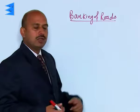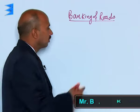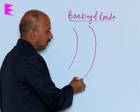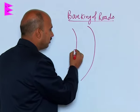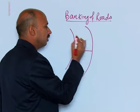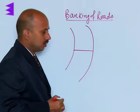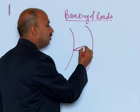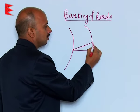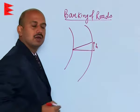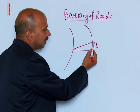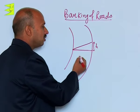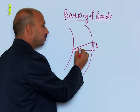Now, let's see banking of roads. What do you mean by the banking of roads? See here, if you have a curved road like this, and this is the level here. Now, if the outer edge of the road is raised by a certain height h, then we say the road has been banked. The outer edge is raised and this angle becomes theta.